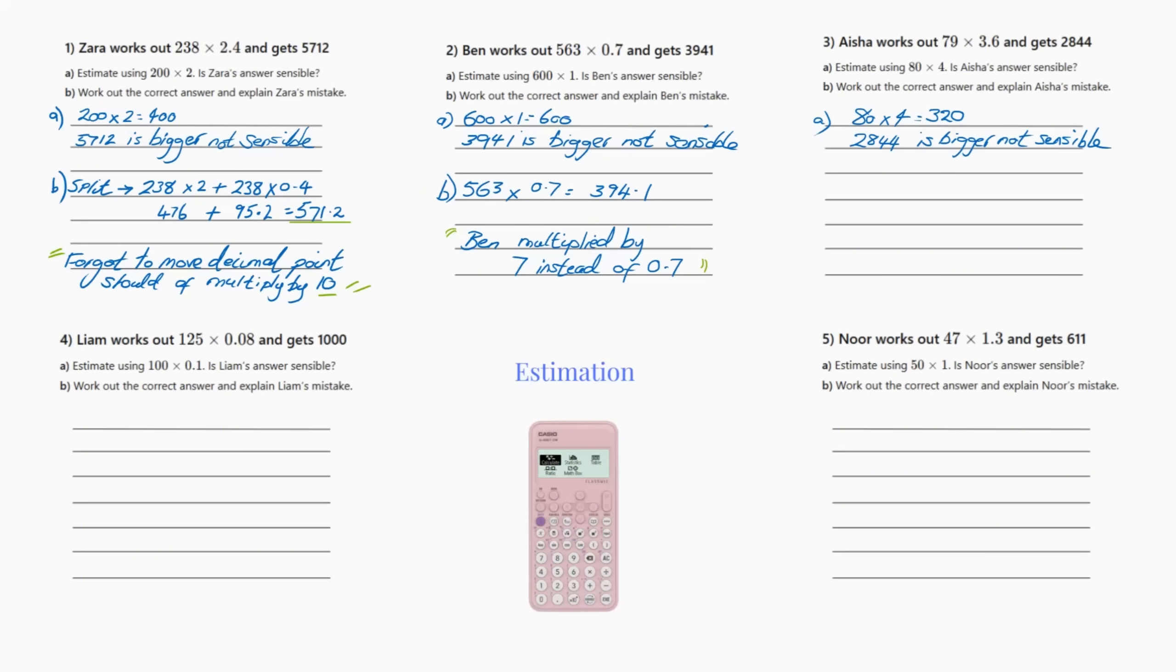They're all very similar purely so you understand the question fully. So the first question I've done for us, it says Zara works out 238 by 2.4 and gets 5712. Estimate using 200 times 2, is Zara's answer sensible?